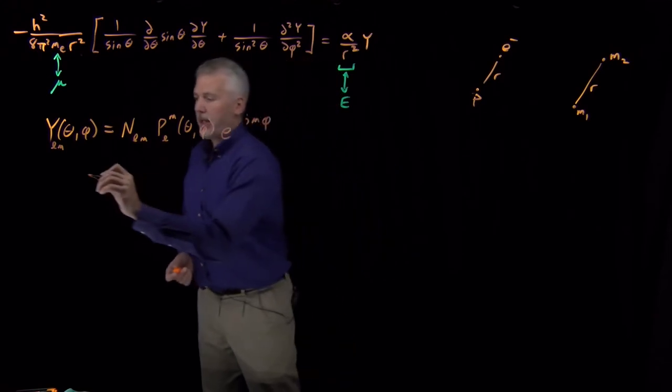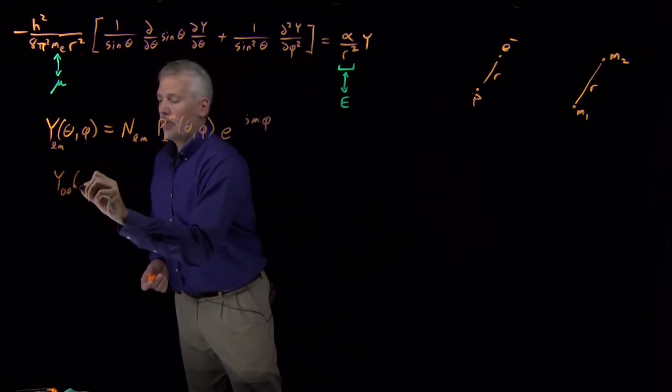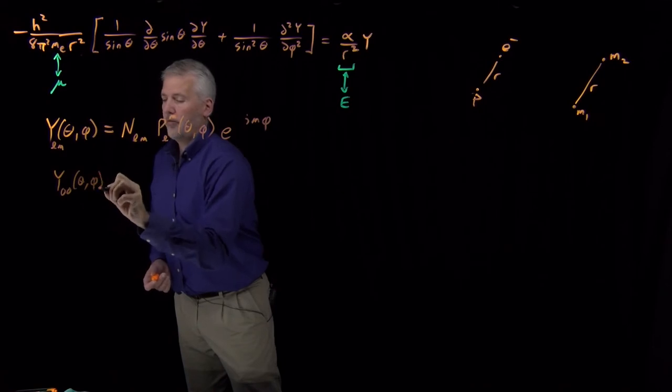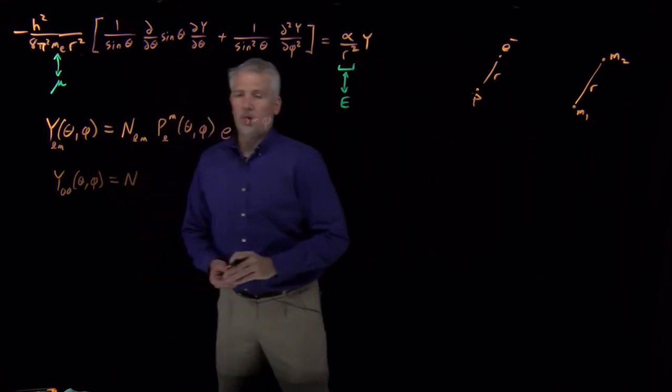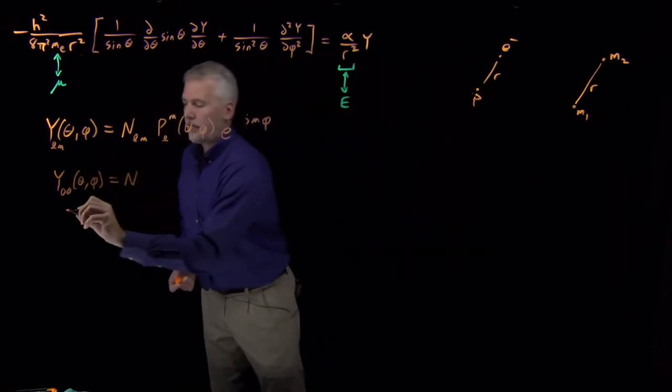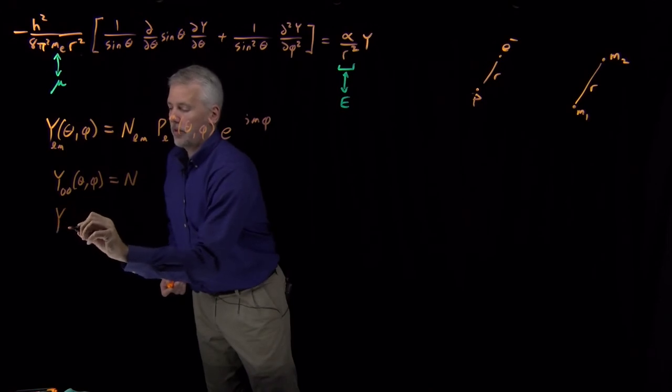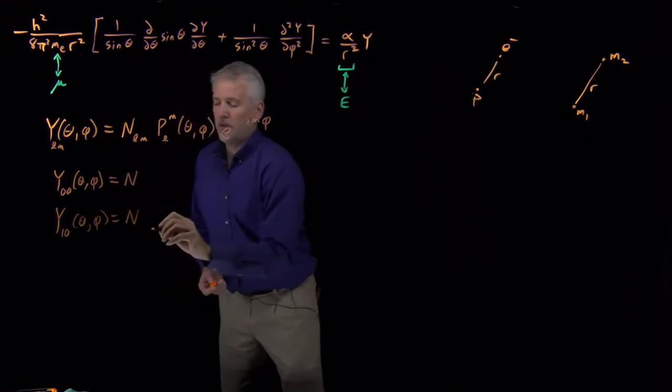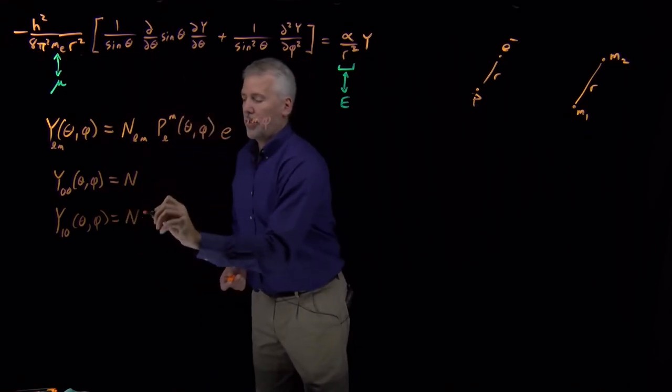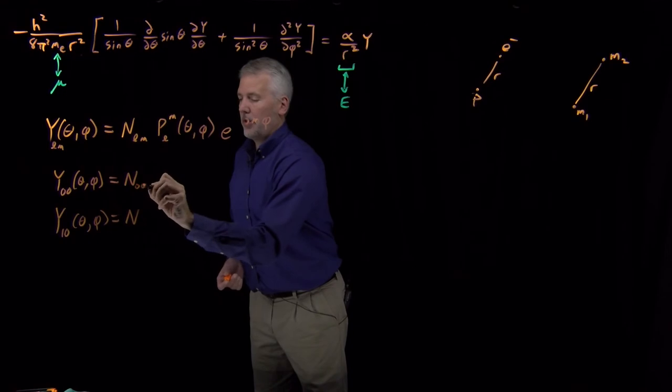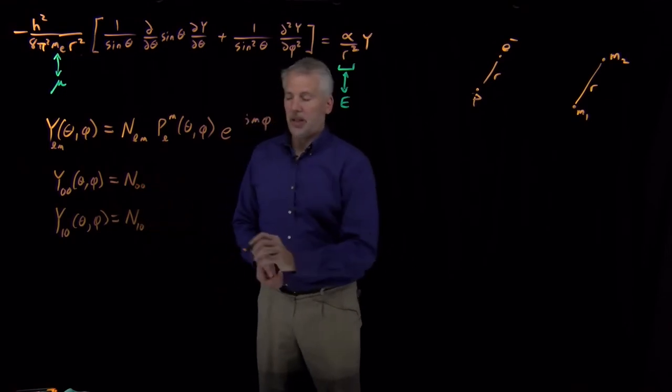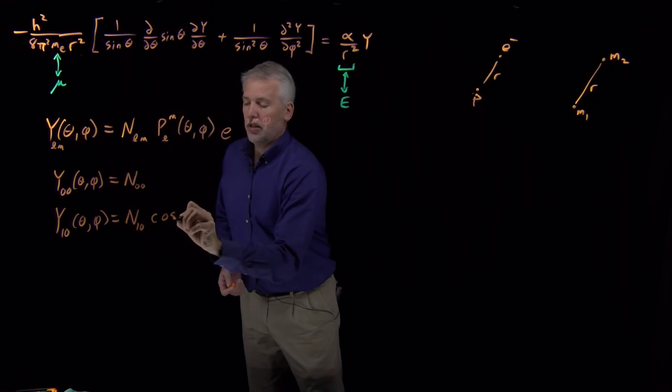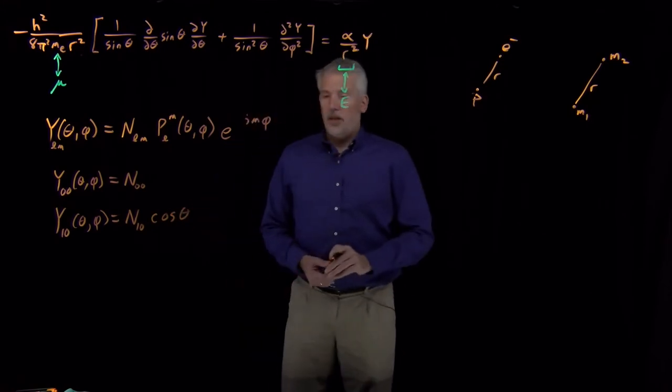And just as a reminder, the 0,0 wave function was just some normalization constant with no angular dependence. The 1,0 wave function was different. If we want to label these, we can label them the 0,0 normalization constant or the 1,0 normalization constant. The 1,0 wave function had some angular dependence in terms of the theta variable.